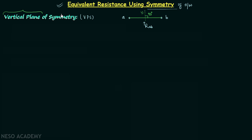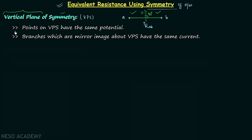This plane is our vertical plane, and we call it vertical plane of symmetry only when this plane divides the left side of the network and the right side of the network symmetrically. That is, when you put a mirror in place of the vertical plane, the mirror image of the left side is the same as the right side. These points will become more clear after taking the examples.